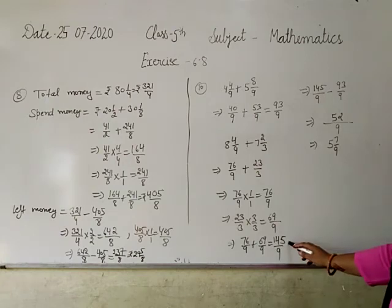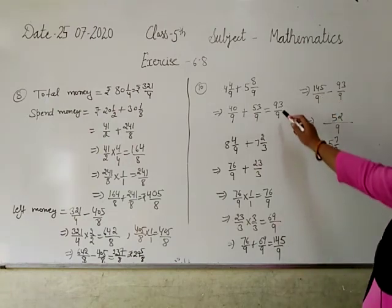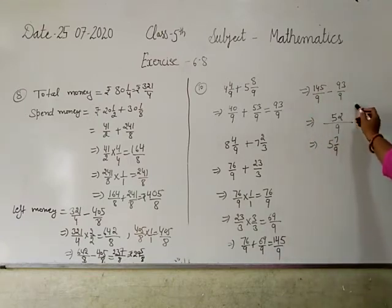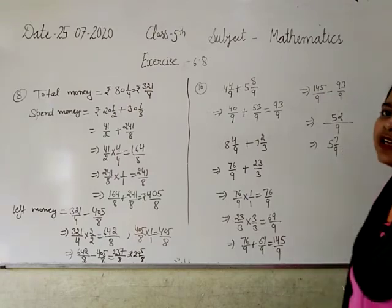Add them to get 145 by 9. Then subtract this from it. Like fractions, so subtract numerators to get 52 by 9, which equals 5 and 7 by 9 as the answer.